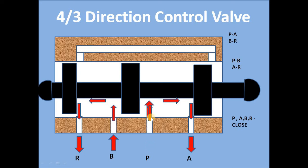Oil coming from P and going towards actuator A port. And oil from B port of actuator is going to reservoir port.